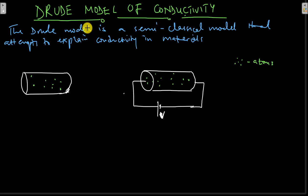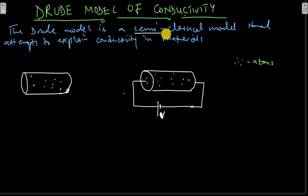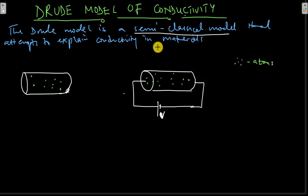In this video we'll discuss the Drude model of conductivity. The Drude model is a semi-classical method that attempts to explain the conductivity of materials.